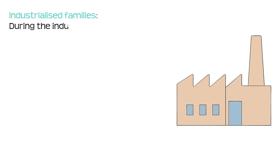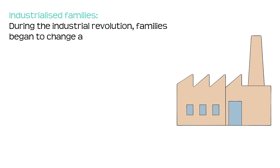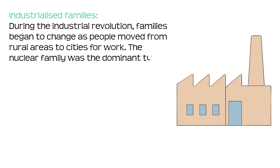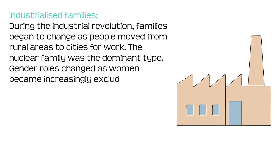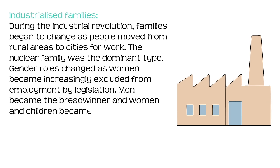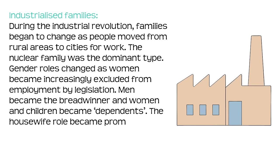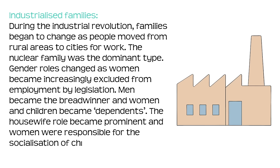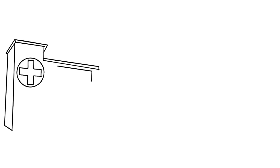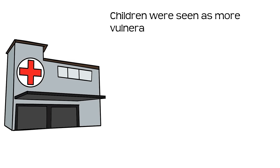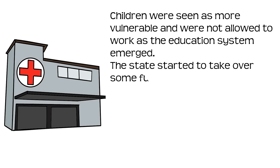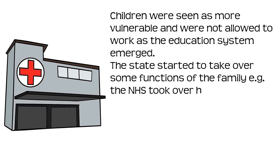Industrialised families: during the Industrial Revolution, families began to change as people moved from rural areas to cities for work. The nuclear family was now the dominant type. Gender roles changed as women became increasingly excluded from employment by legislation. Men became the breadwinner and women and children became dependents. The housewife role became prominent and women were responsible for the socialisation of children and the emotional and physical care of the family. Children were seen as more vulnerable and were not allowed to work as the education system emerged. The state started to take over some functions of the family — for example, the NHS took over healthcare provision.